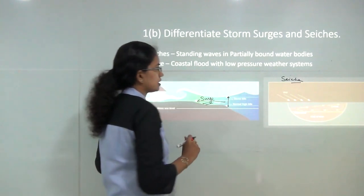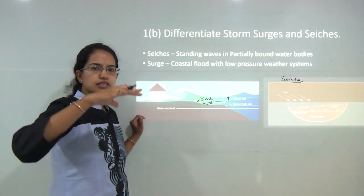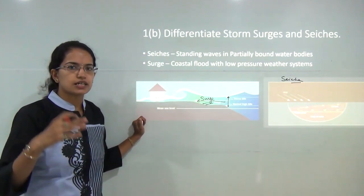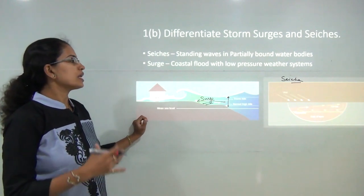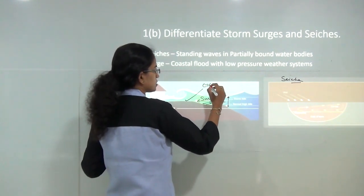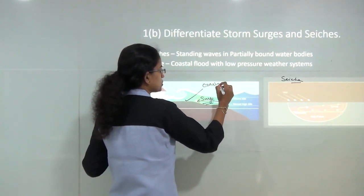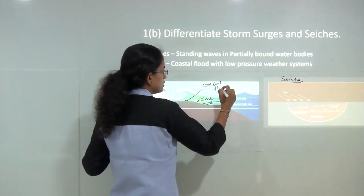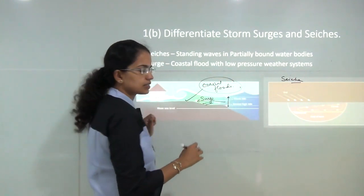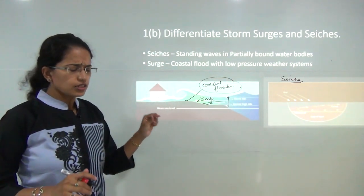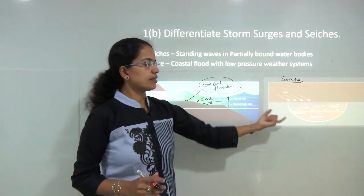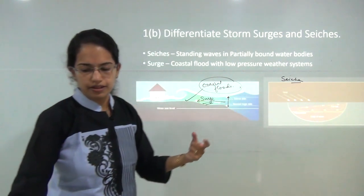A surge is usually created when a significant low-pressure weather system exists in the atmosphere, leading to coastal flooding along the coast. For this question you must explain both seiches and storm surge with the help of diagrams.